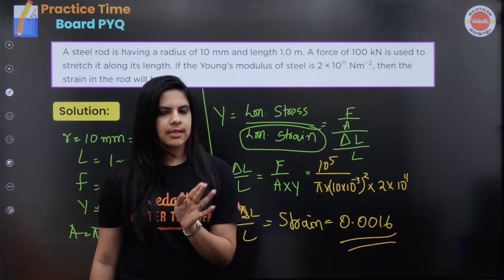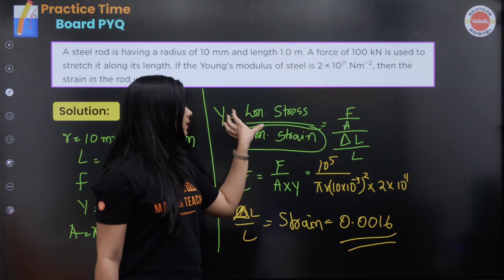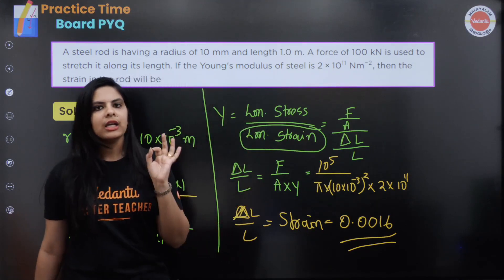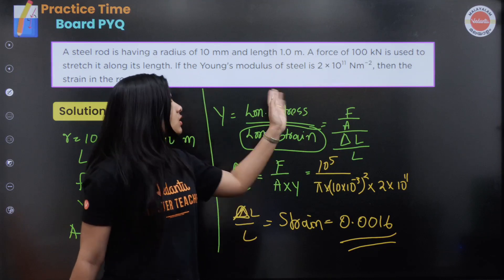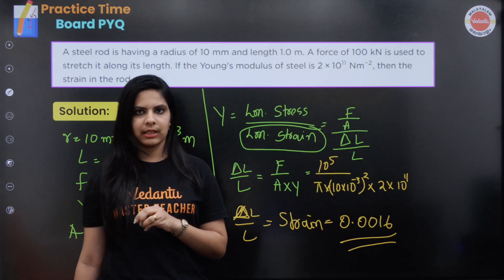This question is very easy. We have all the data and the relation. Young's modulus is longitudinal stress divided by longitudinal strain. Stress is force by area. The strain is change in dimension divided by original dimension.